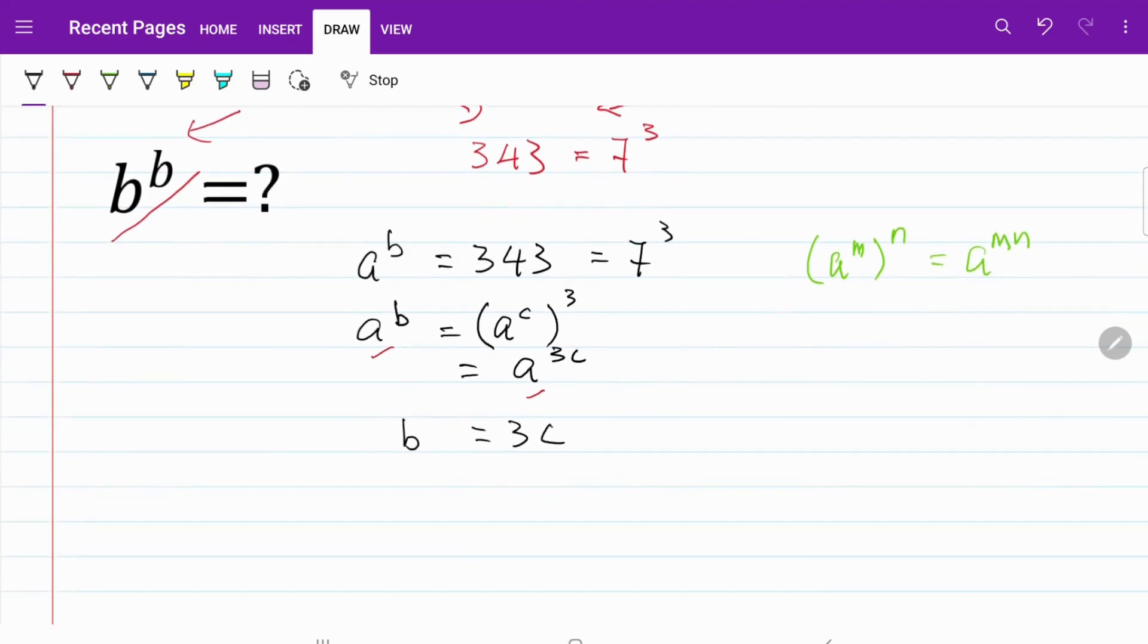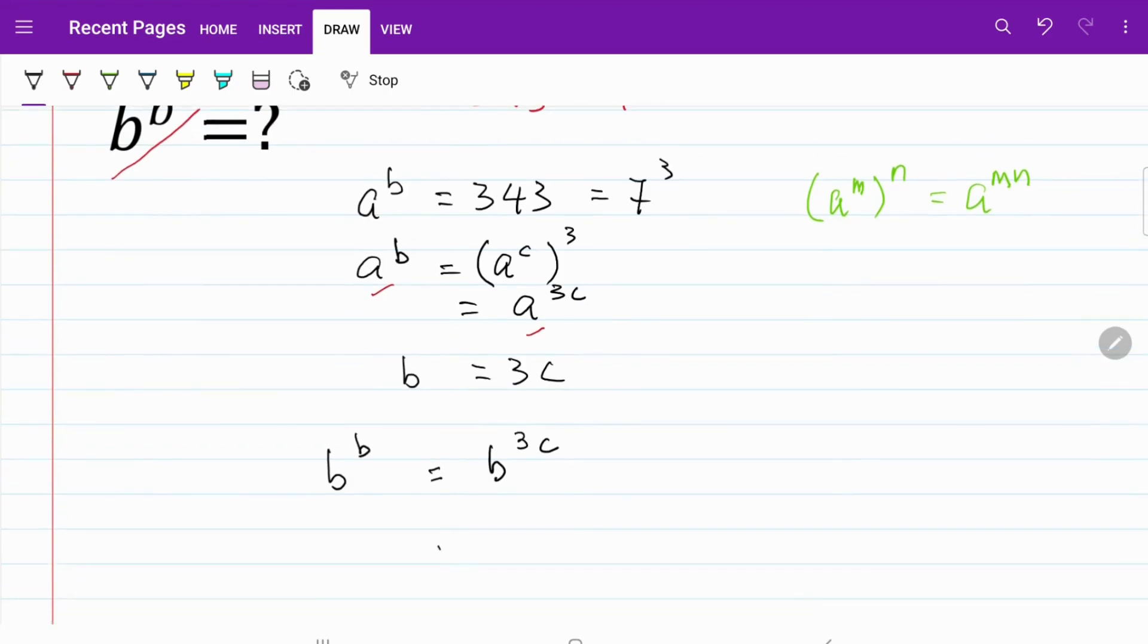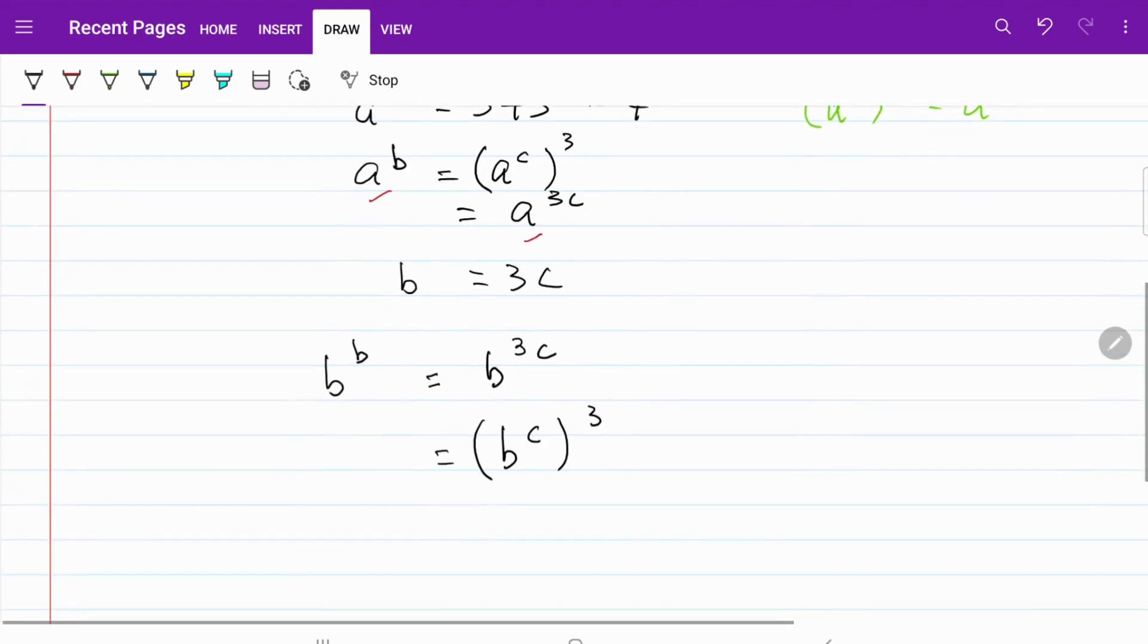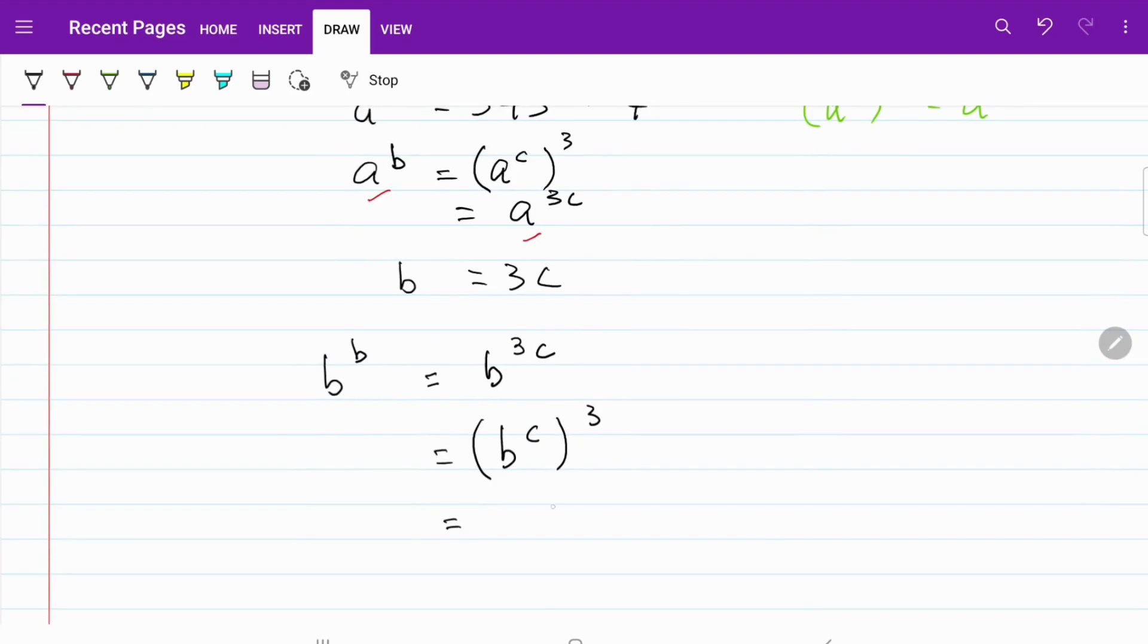And since you are calculating b to the power of b, I can equate that to be b to the power of 3c, which is equivalent to (b^c) cubed. And based on the information that is given, b^c is equal to 10, so (b^c) cubed is equal to 10 cubed, which is equal to 1000.